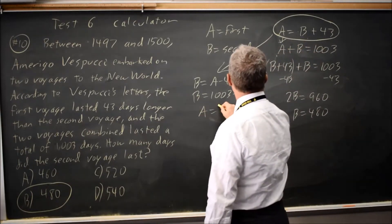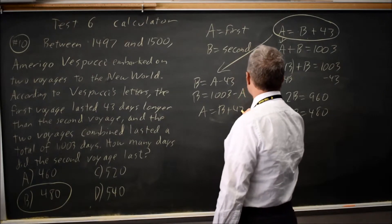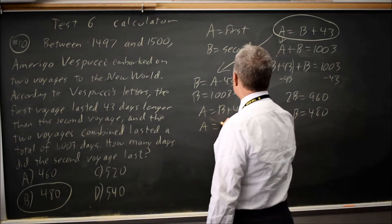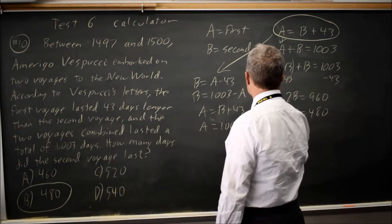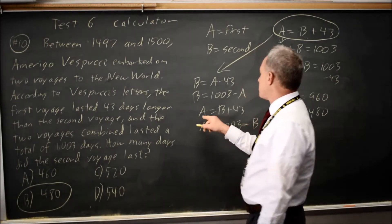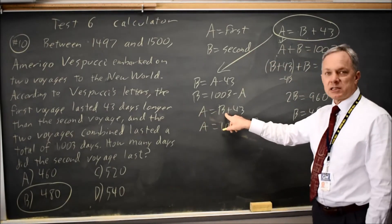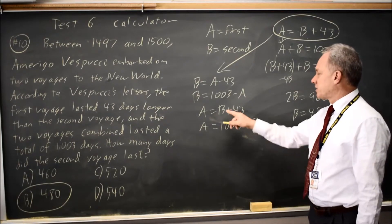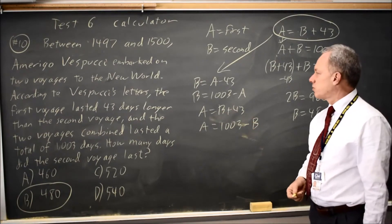Or just A equals B plus 43, and A equals 1,003 minus B. Graph this with A as Y, B as X, and the X value at the intersection is now the length of the second voyage.